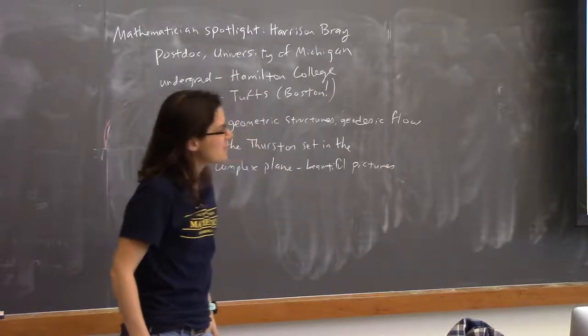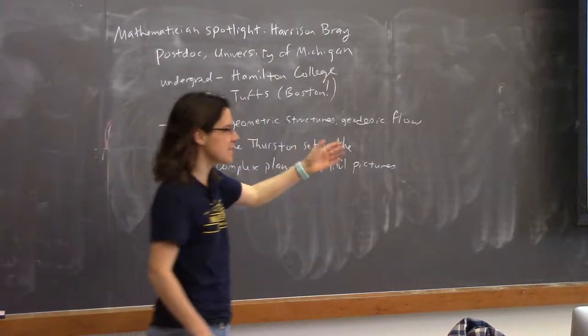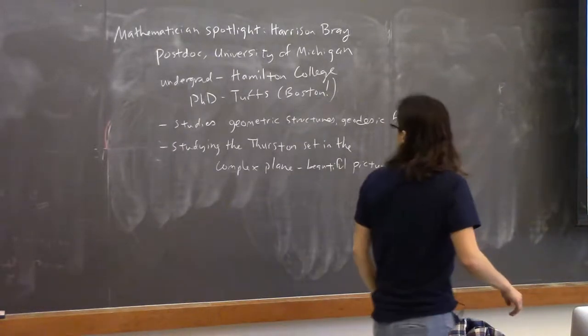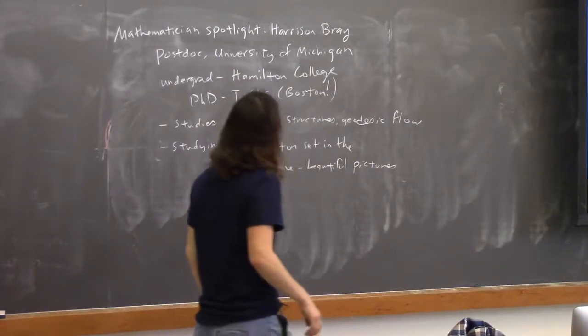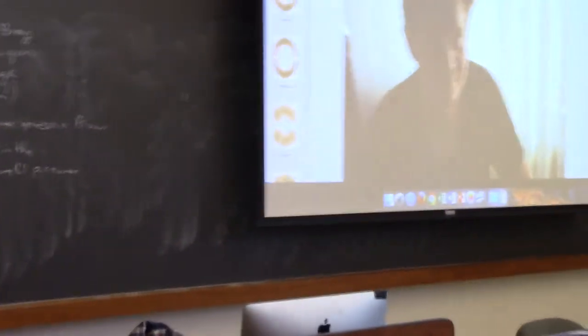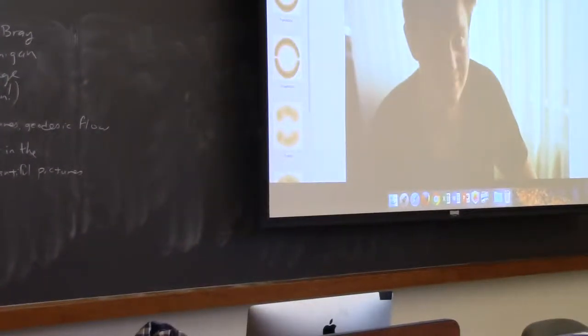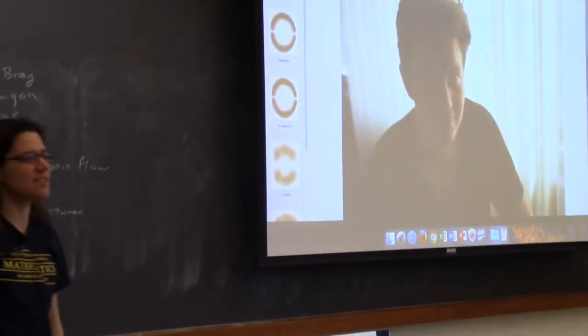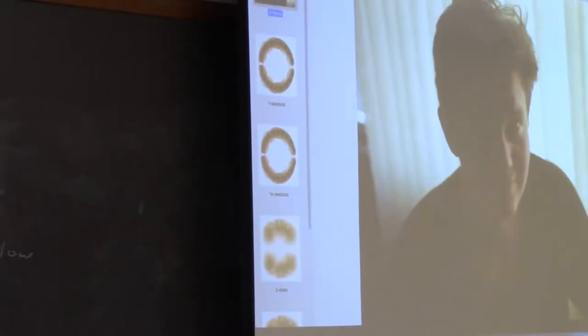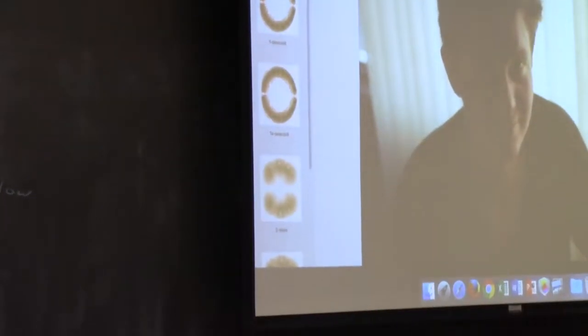Today our mathematician spotlight is Harrison Bray. Here's a picture of Harry. He's a post-doc at the University of Michigan. He did his undergrad at Hamilton College, a small liberal arts college much like Swarthmore, and his PhD at Tufts University.